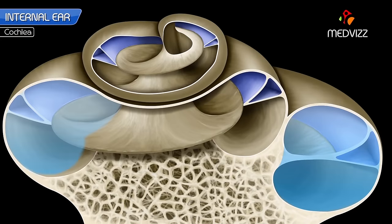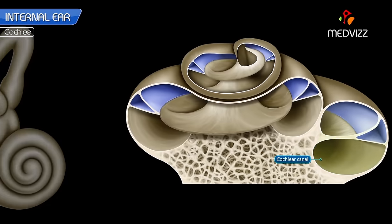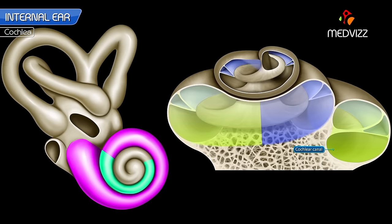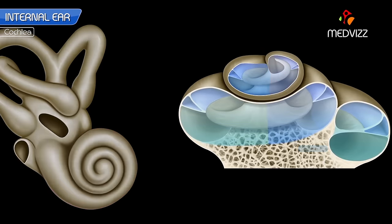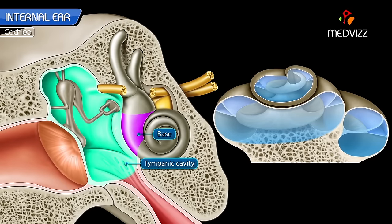The cochlear canal is arranged spirally around the modiolus and makes two and three-quarter turns. Its basal turn bulges into the tympanic cavity as a promontory.